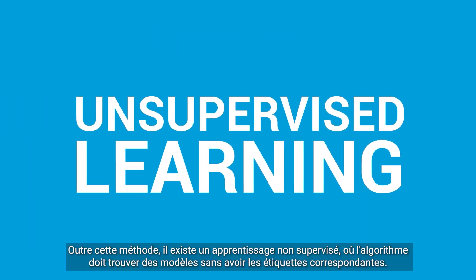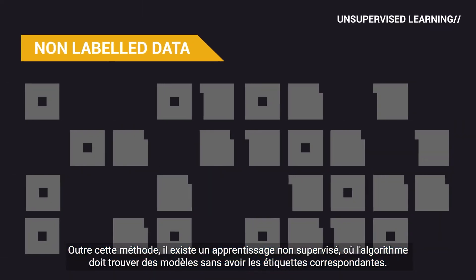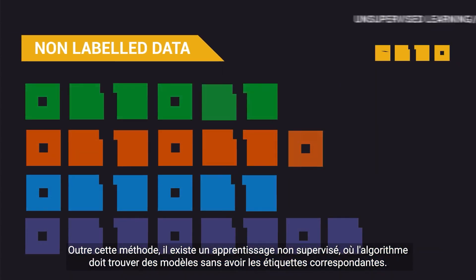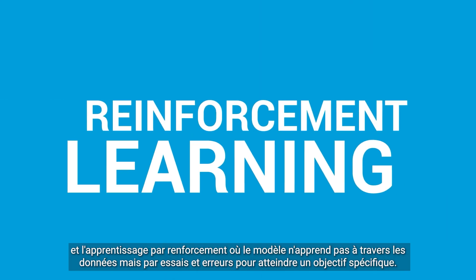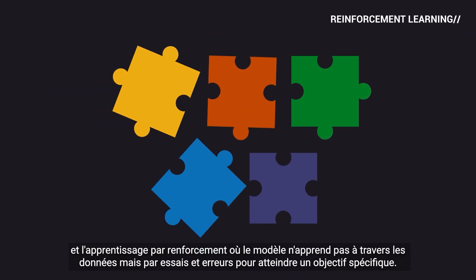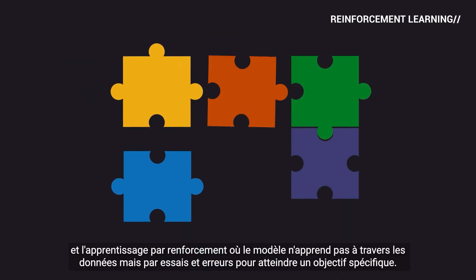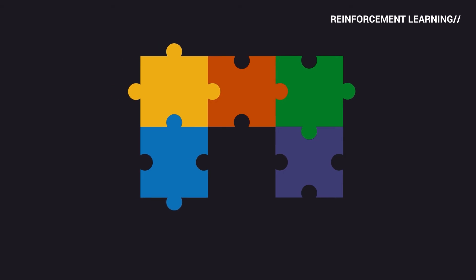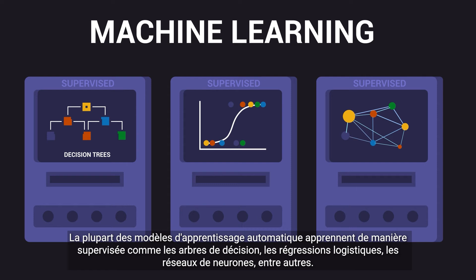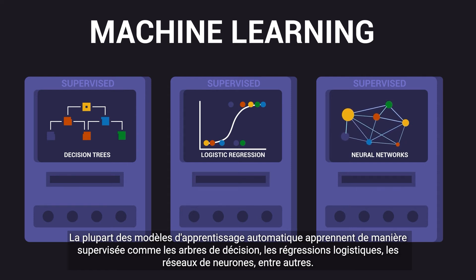Besides this method, there is unsupervised learning, where the algorithm has to find patterns without having the corresponding labels, and reinforcement learning, where the model does not learn through data but through trial and error to achieve a specific goal. Most machine learning models learn in a supervised manner, like decision trees, logistic regressions, and neural networks, among others.